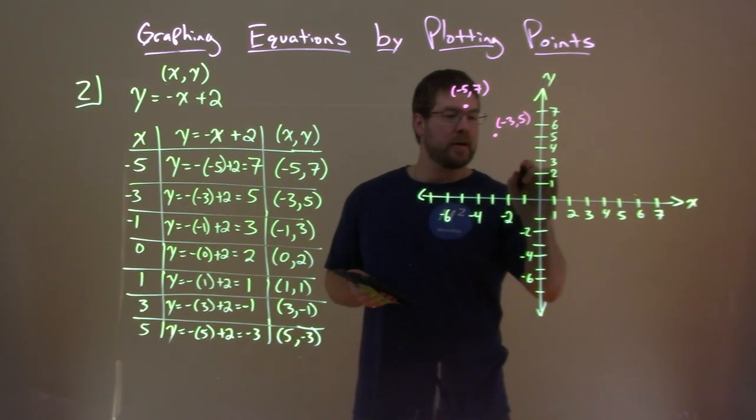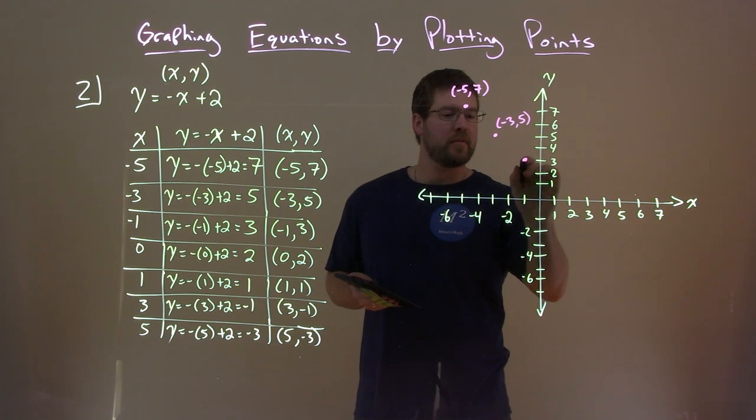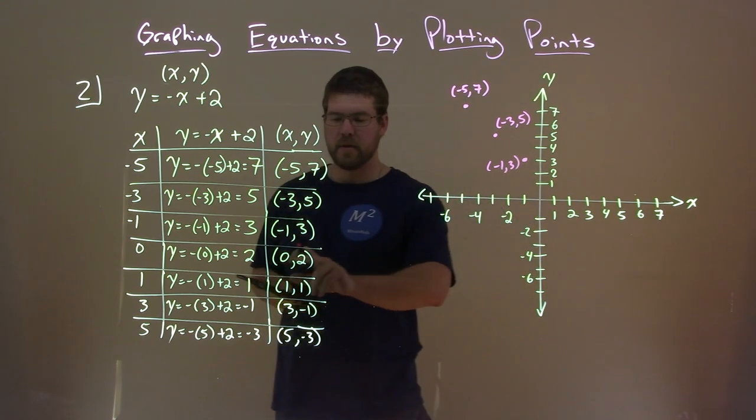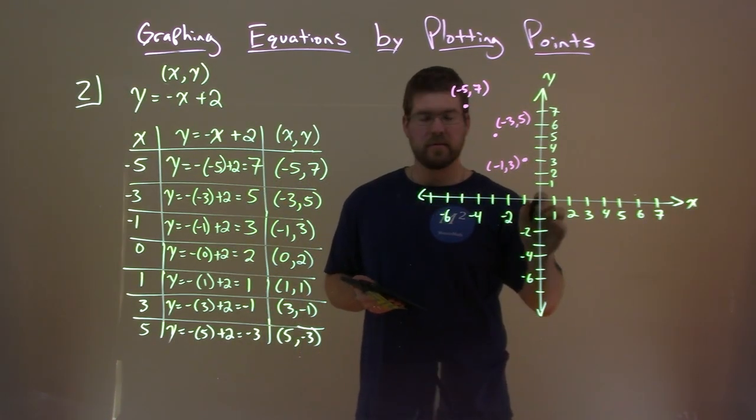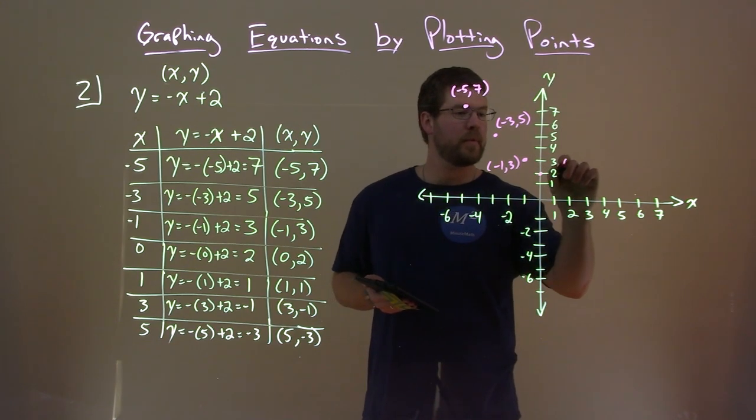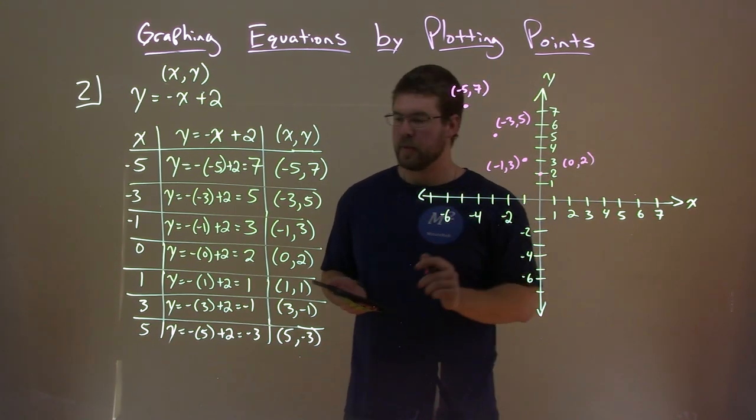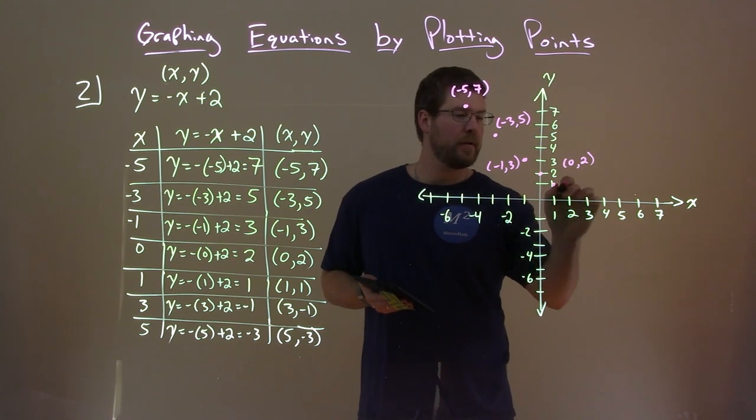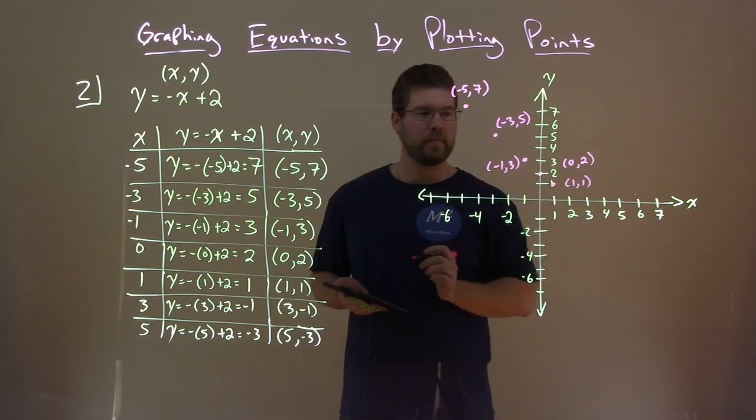Next one, negative 1 comma 3. A little off there, but it's all right. So we have negative 1 comma 3 right here. 0 comma 2. 0 on the x axis, 2 on the y. That's that point. 1 comma 1. So 1 on the x, 1 on the y, right here.